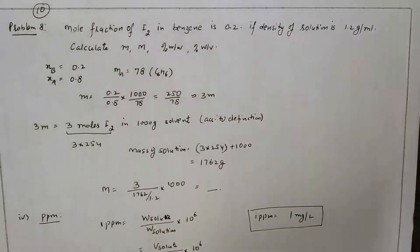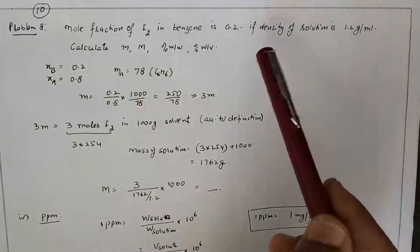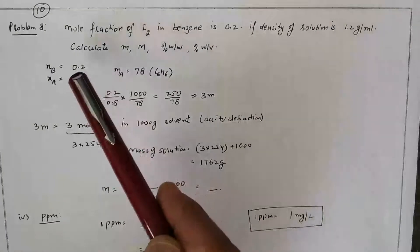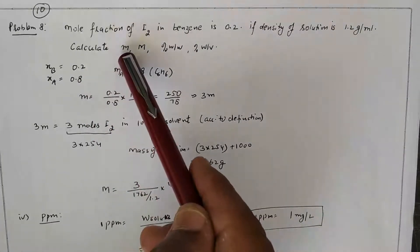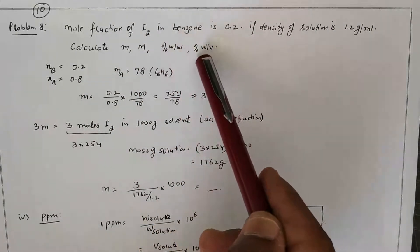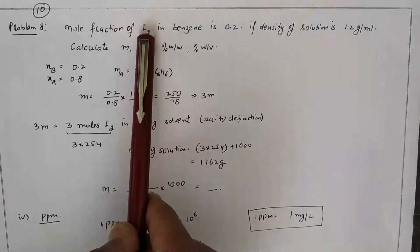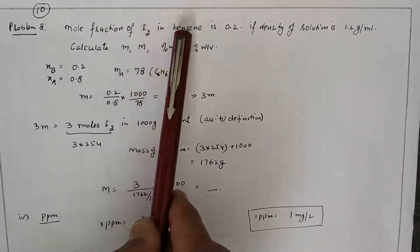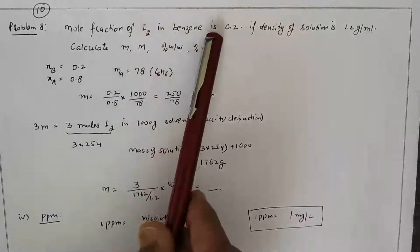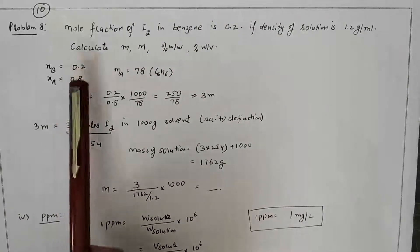Problem 10: mole fraction of iodine in benzene is 0.2 and density of solution is 1.2 g/mL. Calculate molarity, percent weight by weight, and percent weight by volume. Iodine is the solute and benzene is the solvent, so x_B (iodine) = 0.2, which means x_A (benzene) = 1 − 0.2 = 0.8.